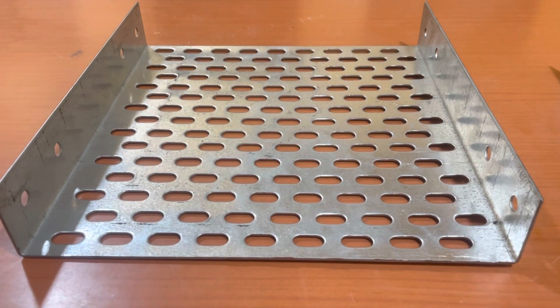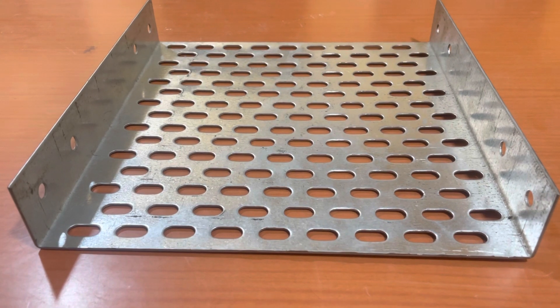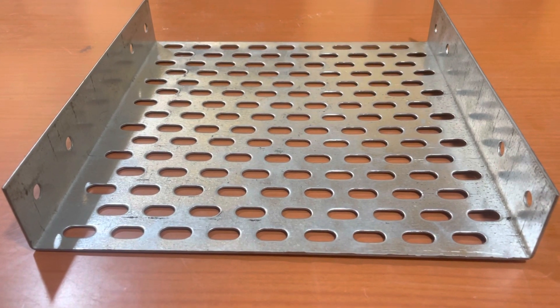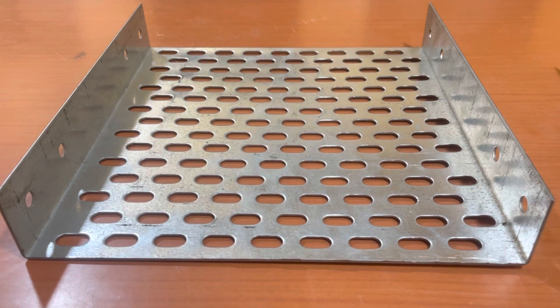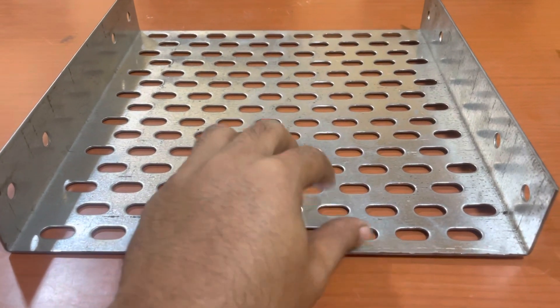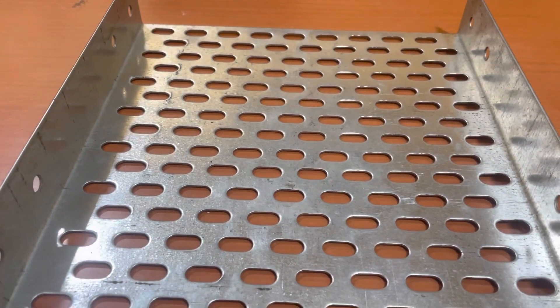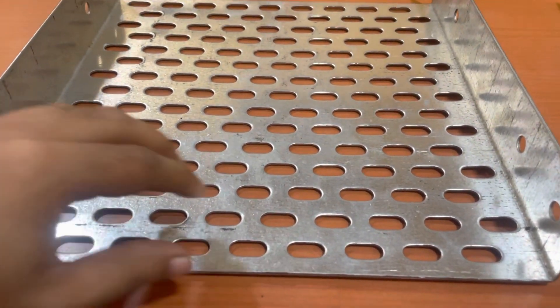Hey guys, this video is related to selection of cable trays from hot dip galvanized, pre galvanized, and powder coated types. This is the first basic type, called pre galvanized cable tray. This is made up with 2mm thickness pre galvanized material.